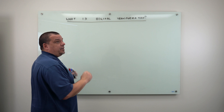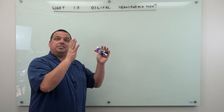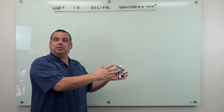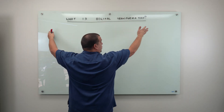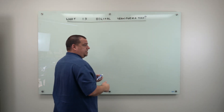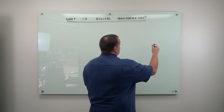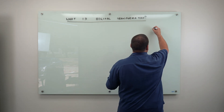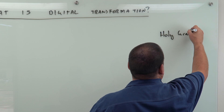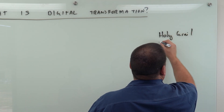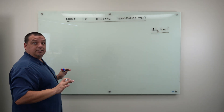So what is digital transformation? Digital transformation is the process that an Industry 3.0 organization goes through to become an Industry 4.0 organization. And what are you trying to achieve with an Industry 4.0 organization? You want the holy grail of manufacturing — you want to get there.